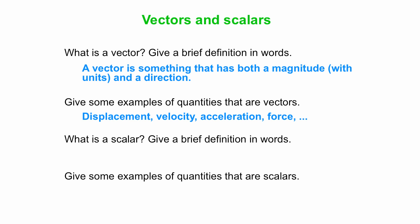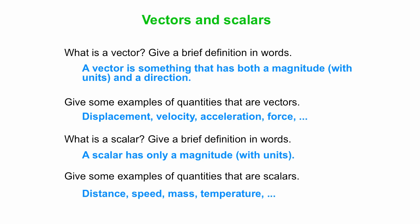A scalar on the other hand doesn't have any direction. So it only has a magnitude, and again of course has some units. So some examples: distance, speed, mass, temperature.